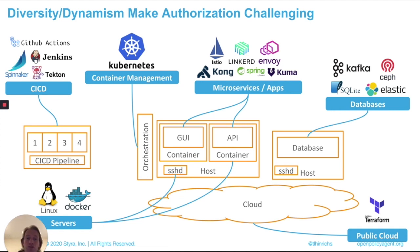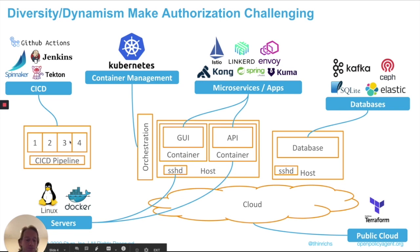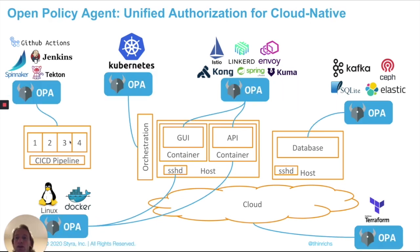Each and every one of these different pieces of software have their own way of solving that authorization policy problem. From a user's point of view, if you're given a document that says here's a policy that needs to be enforced — here is who is allowed to perform which actions — and you're trying to enforce that across your stack of software, you're going to have to figure out and learn those many different APIs, GUIs and models. So because of all this, we created a project that became known as the Open Policy Agent Project.